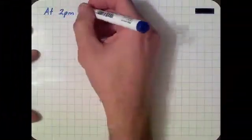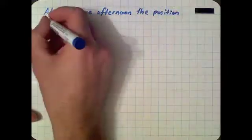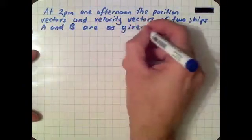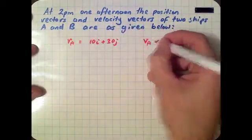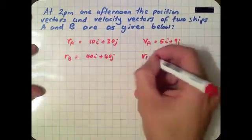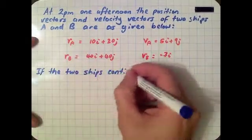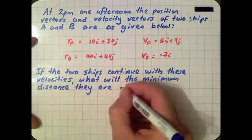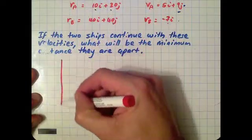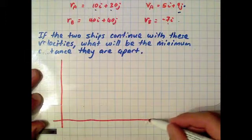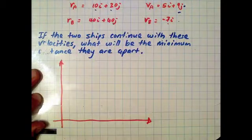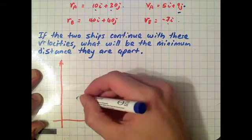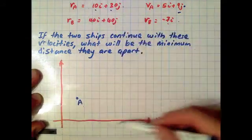Let's look at the third example. At 2 p.m., the position vectors and velocity vectors of two ships A and B are given. This has got a position vector and then a velocity vector for each ship. If the two ships continue with these velocities, what will the minimum distance they are apart be? Let's use a diagram. The position vector of A is 10 along and 30 up, roughly here. The position vector of B is 40 along and 40 up, roughly there.